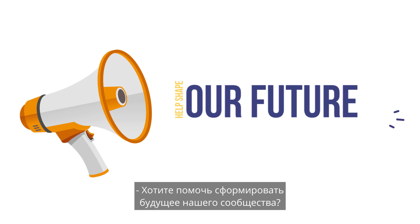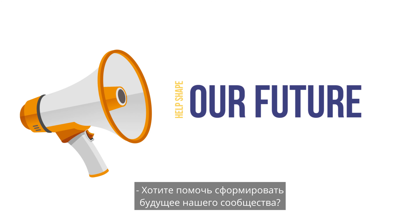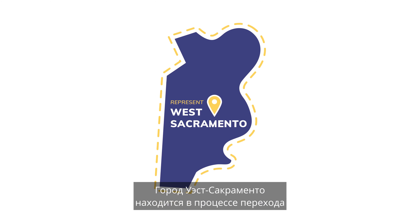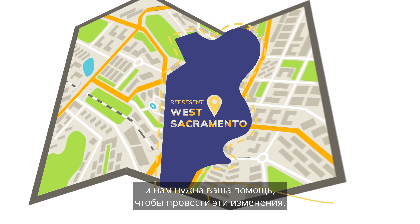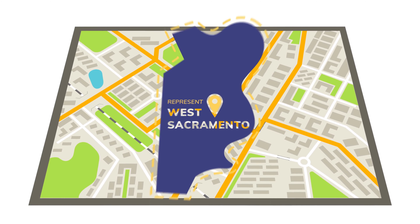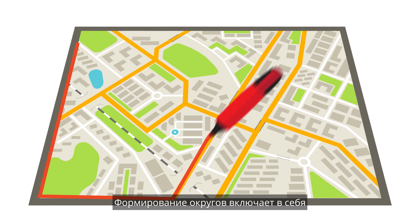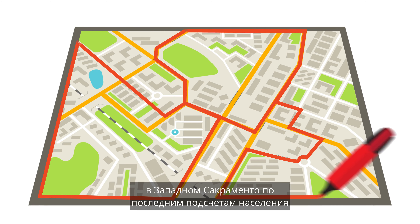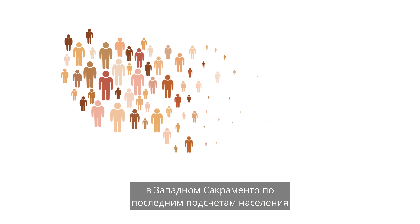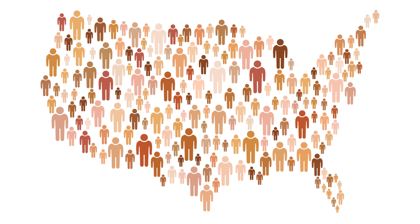Want to help shape the future of our community? The City of West Sacramento is in the process of shifting to City Council districts, and we need your help to make this change. Forming districts involves drawing the first-ever voting lines in West Sacramento, based on the latest population counts from the 2020 Census. The goal is to draw each district line so that our diverse neighborhoods and communities are fairly represented and have a voice.